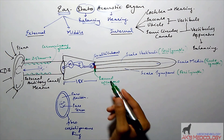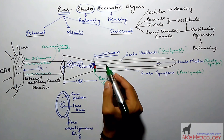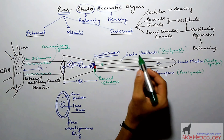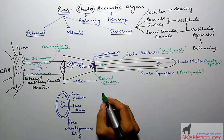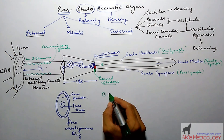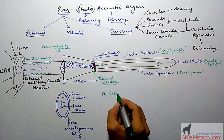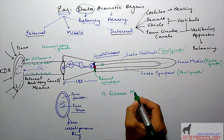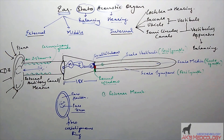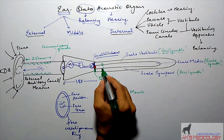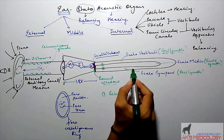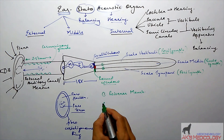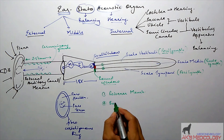The test tube within a test tube structure also creates two membranes. The first membrane, between the scala vestibuli and scala media, is Reissner's membrane. The second membrane, between the scala media and scala tympani, is the basilar membrane.